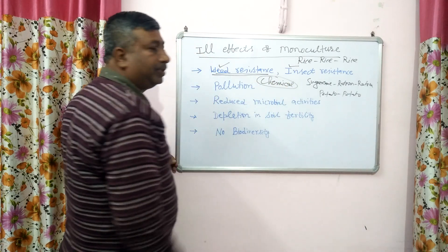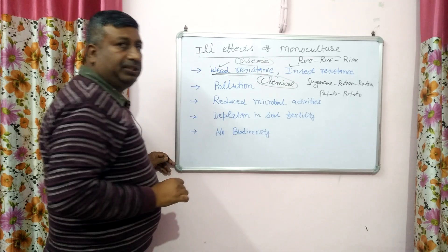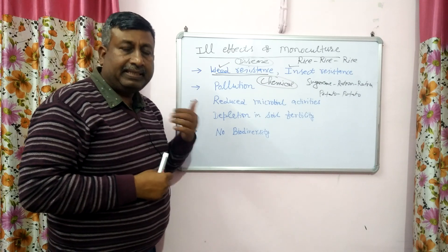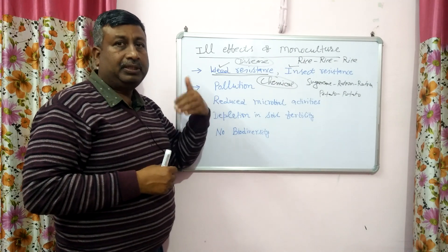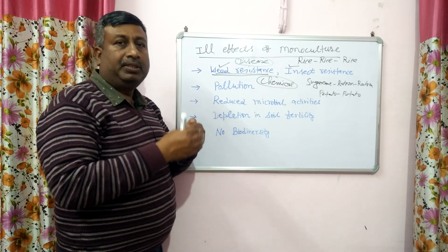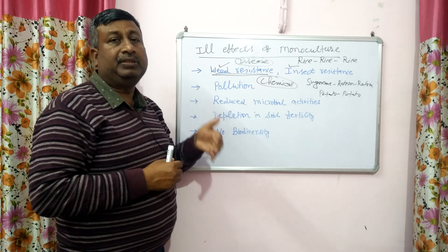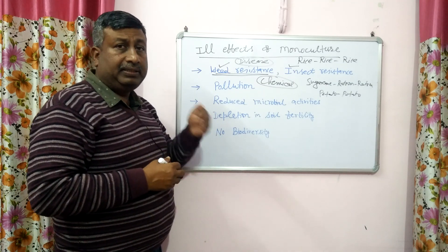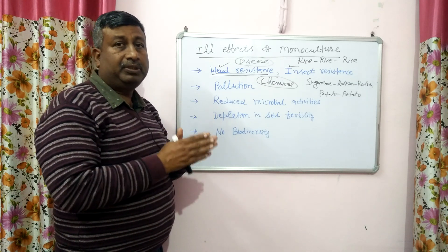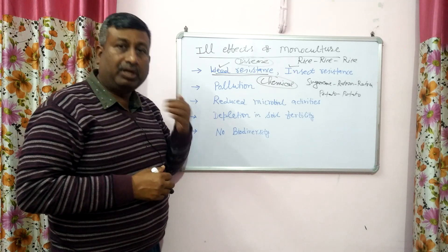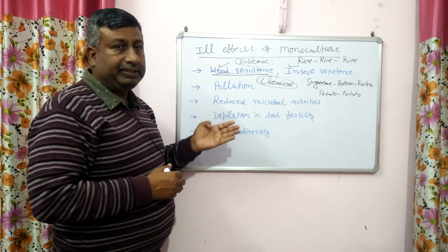This is the problem with disease also. Disease infection increases and disease persists. Disease would change with a change in crop, but since there is continuously the same crop, disease persists in the field and disease infection increases. We have to apply more dose of chemicals. So we have to increase the dose of herbicide, the dose of insecticide, and the dose of fungicides.